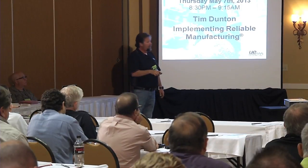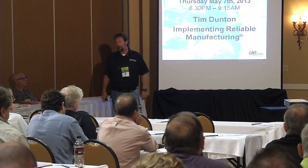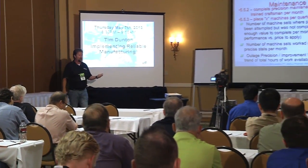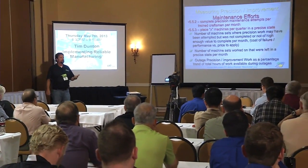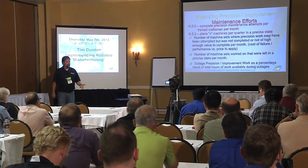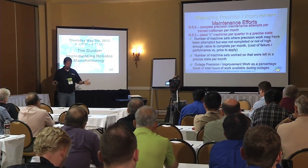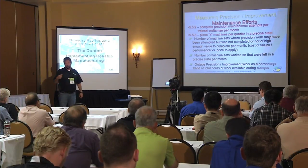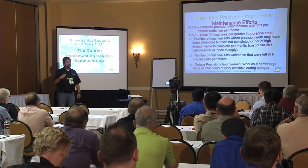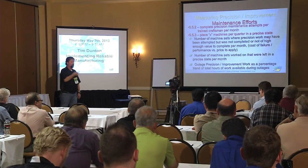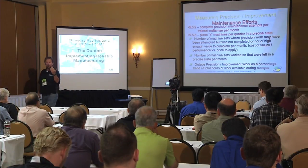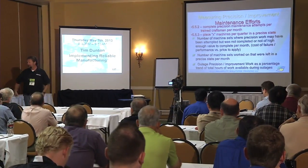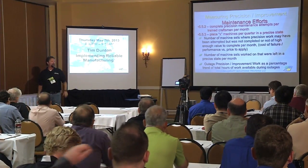Precision state isn't just 0.07 inches per second, by the way. That's 0.07 inches per second with a fully documented, properly conducted soft foot check, pipe strain checks, thermal growth accounted for, and all the other stuff that goes into that. What a lot of people struggle with initially is the documentation. So they actually throw in a metric for number of attempts, number of successes, and number of successes with completed documentation — so they can manage the documentation side of it.